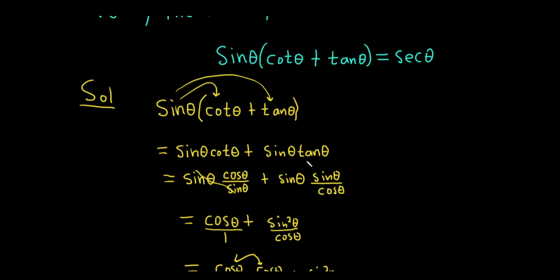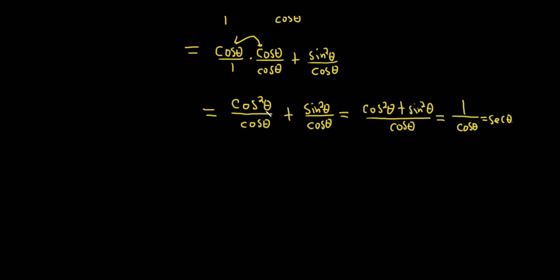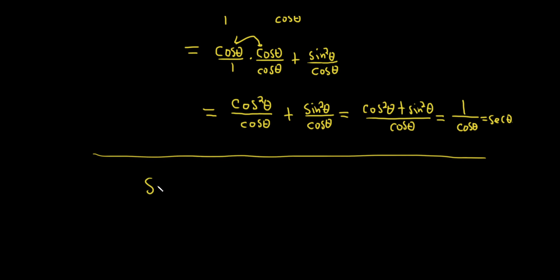Perhaps another way to do it would be to first focus on this piece. We could add these two up first, then multiply by sine — that might work. In fact, let's go ahead and try it, just to see if it's a little bit easier. So we have sine theta, parentheses, cotangent of theta plus tan theta.